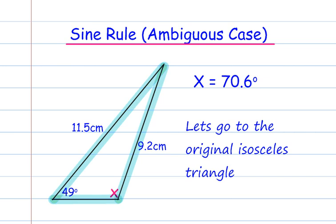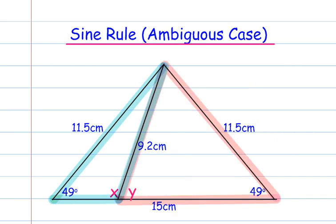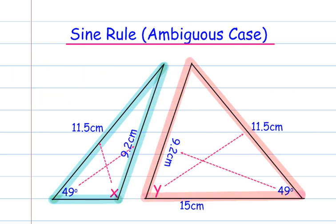Let's go back to the original isosceles triangle that we started the question with. This time I'm going to highlight the other triangle in pink so that we can see, and I'm going to call this angle Y. Let's look at these two triangles and split them.